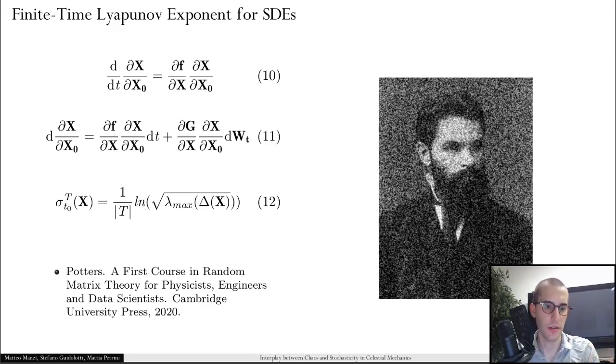The generalization is given here. It's fairly easy because the differentiation is a linear operator, so we can simply compute the differential of the partials, and we have that the state-transition matrix is actually a stochastic process, which is an interesting concept.